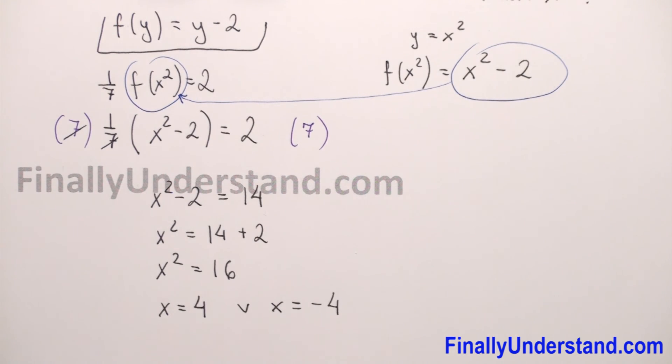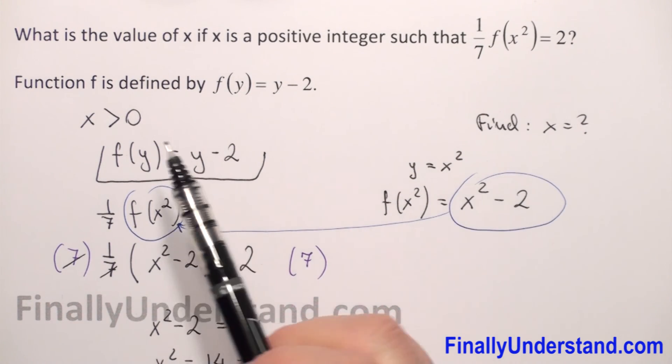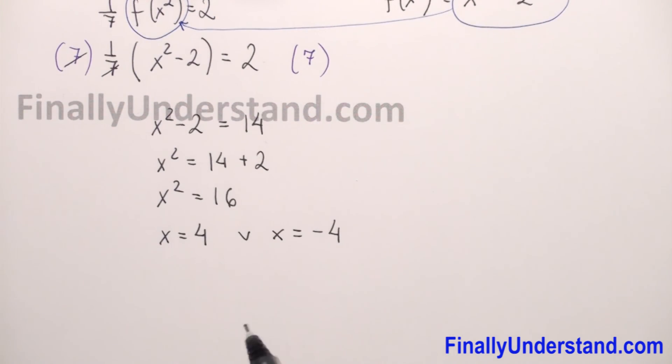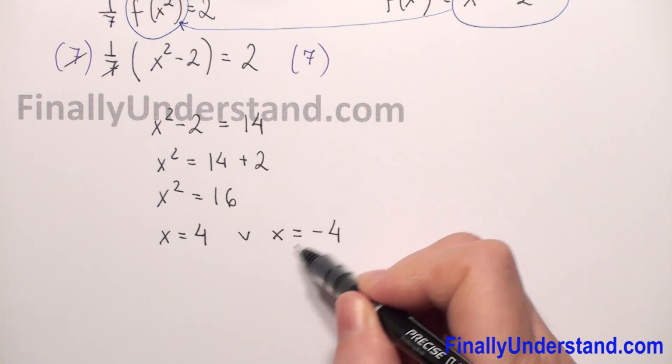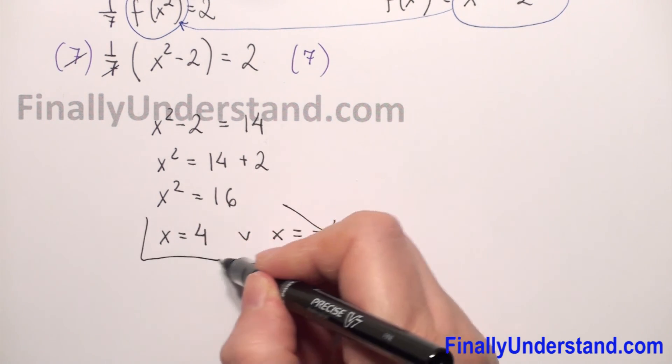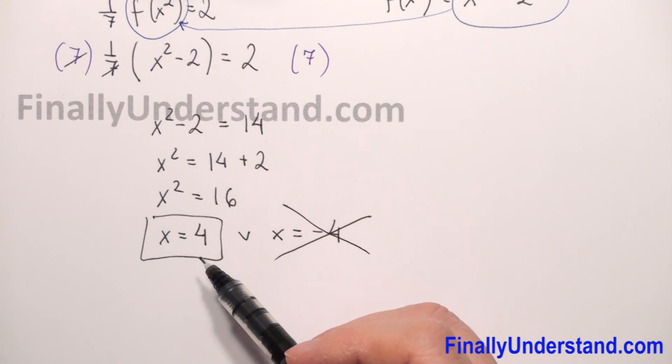But we have at the beginning that x is positive integer, so x equals negative 4 cannot be solution to our problem. Only x equals 4 because x must be greater than 0.